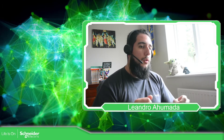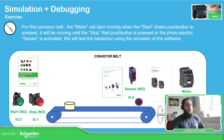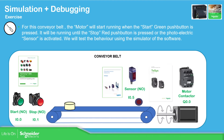Hello everybody, welcome back to the guidance of the Modicon M221. In this video we're going to see how we can debug our program. We are still working with the machine that we were programming — the small conveyor belt. We have the motor, the sensor, the start push button and the stop push button.